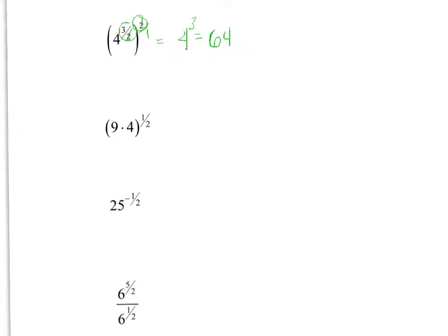On our next one, remember, when you have, and this is very important, when you have a multiplication inside the bubble, and it only works with multiplication, it does not work with adding, you can distribute your exponent. So this would be 9 to the 1 half times 4 to the 1 half. Remember, a fractional exponent means a square root, so the square root of 9 is 3, the square root of 4 is 2, and 3 times 2 is 6.